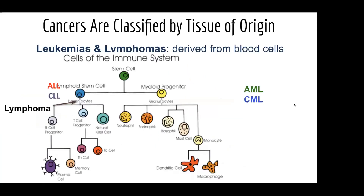The last main type of cancers are leukemias and lymphomas, and they are derived from blood cells. A lot of times these are called liquid cancers because blood looks like a liquid. Most of these are called by their acronyms: AML, CML, ALL. This diagram shows where those different types of cancer sit.